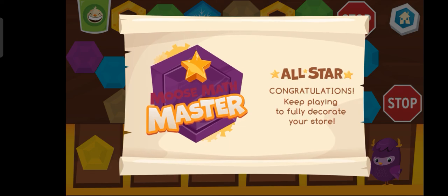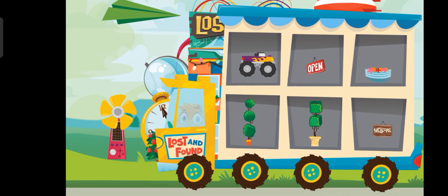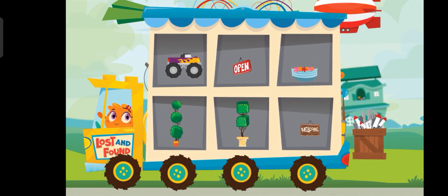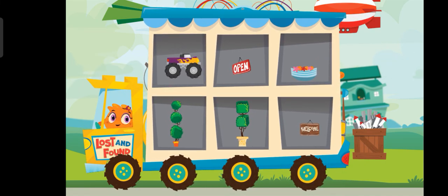You are a moose math master. Choose an item for your city. Go! Three. Go! Go! Go!